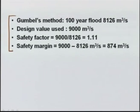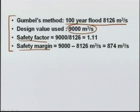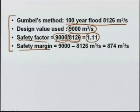Other common terms include the safety factor and safety margin. If the 100-year flood is estimated as 8126 m³/s but the design uses 9000 m³/s, the safety factor = 9000/8126 = 1.11, and the safety margin = 9000 − 8126 = 874 m³/s. So we have seen how to estimate the design flood, reliability, and risk.